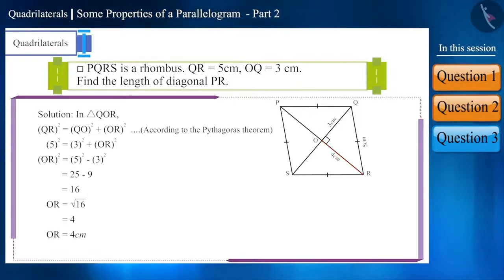And since PO is equal to OR, therefore, PO will be equal to 4 cm. Diagonal PR is equal to PO plus OR. Therefore, we get the length of the diagonal PR equal to 8 cm.